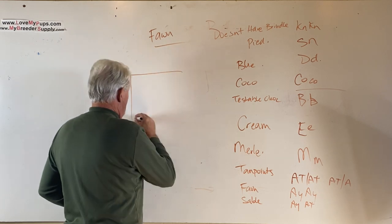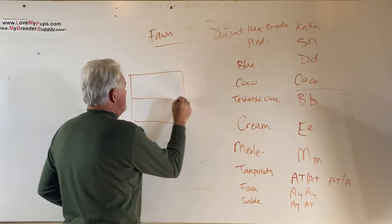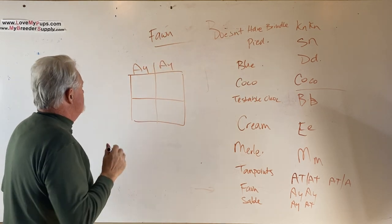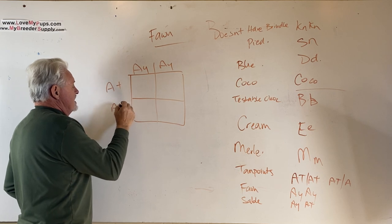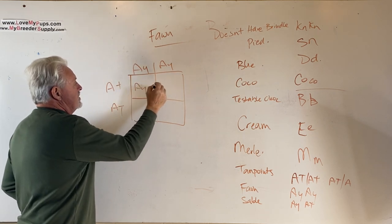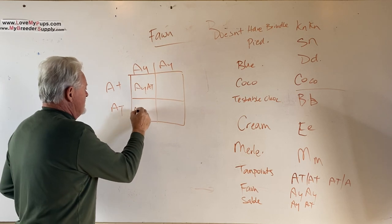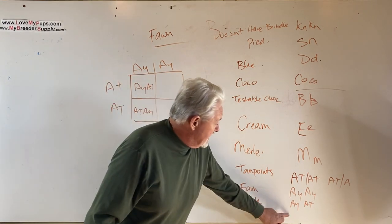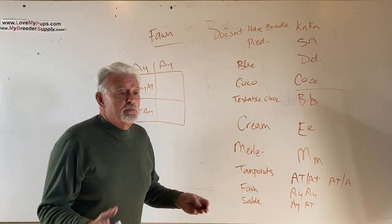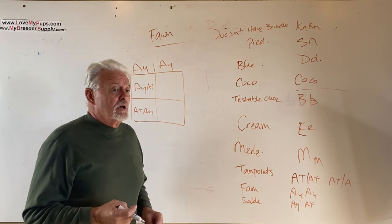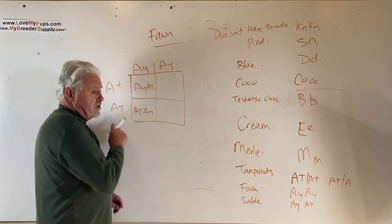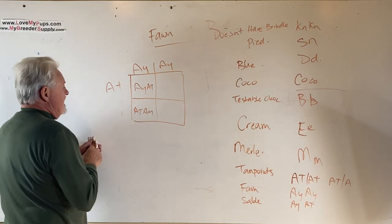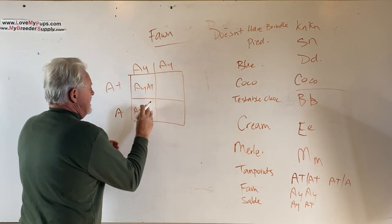We're going to assume that one of the parents had nothing to do with tan points at all—it was AyAy. And we're going to look at two possibilities. One is that the parent has two copies of At, nice tan points. Every single dog will be AtAy. They will all be that. Every dog will have a copy of tan points, and if they don't have brindle, they're going to be sables. So if you've got sable puppies in the litter or your dog is a sable, there's a very good chance that your dog almost certainly has a copy of At.